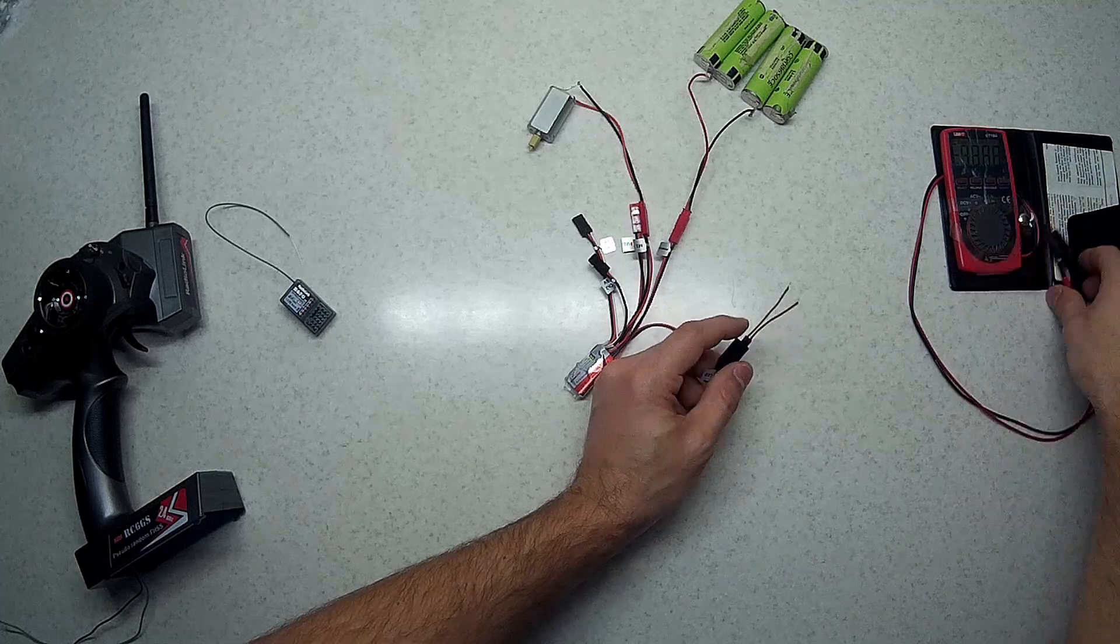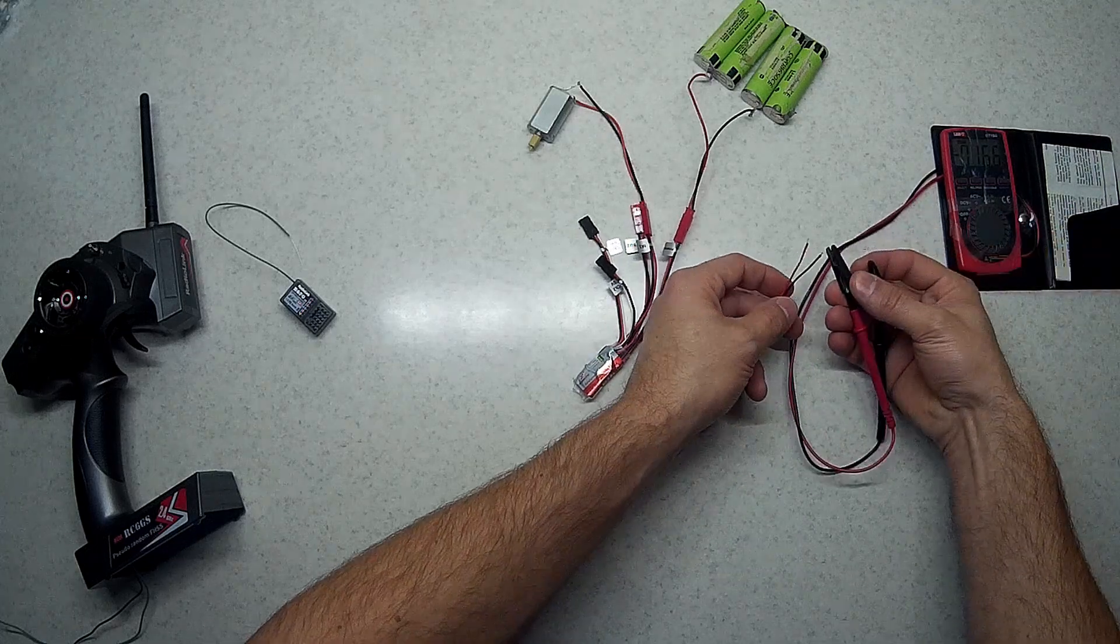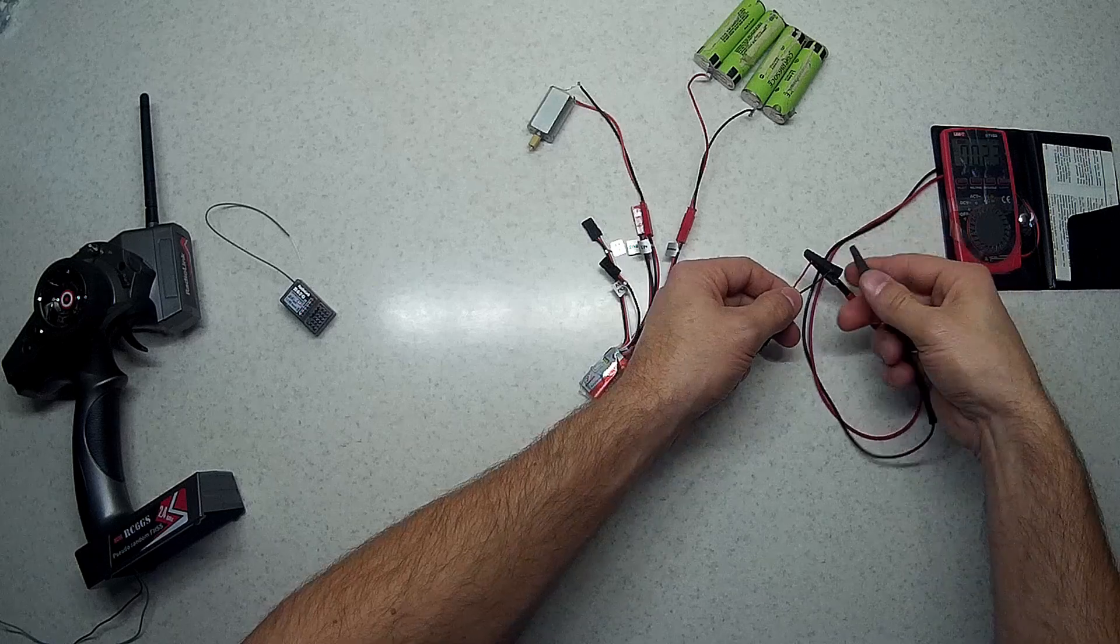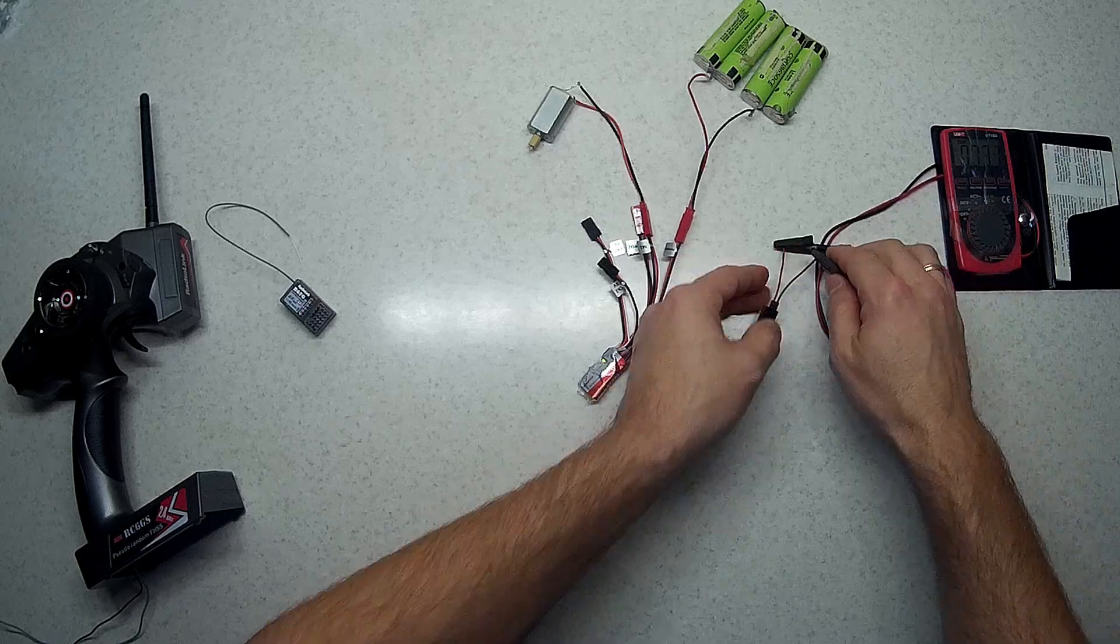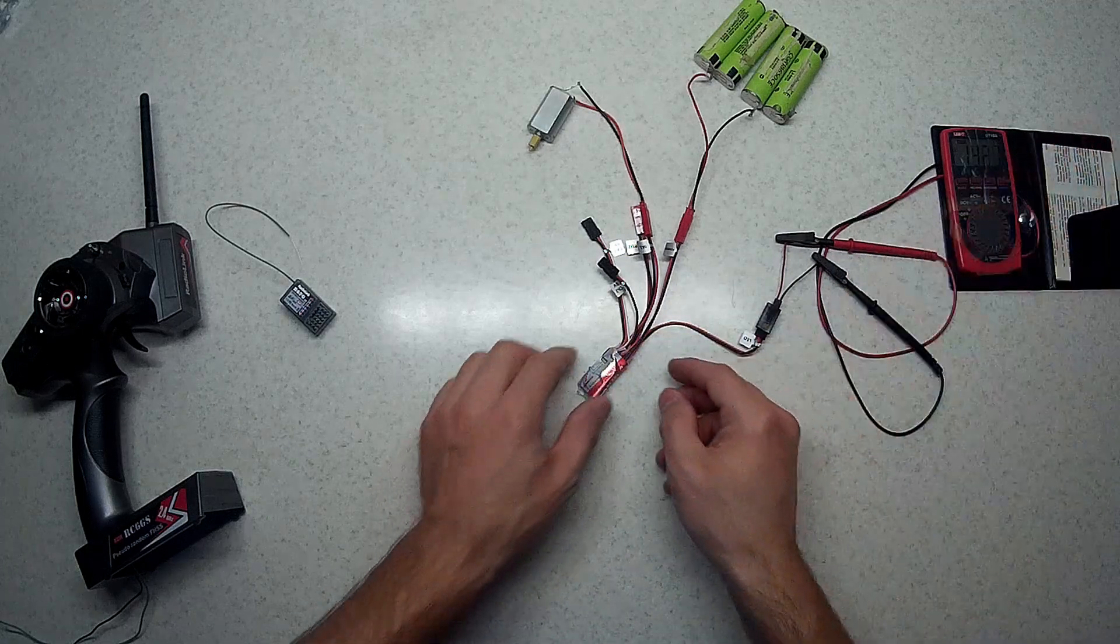So I will connect this wire here, and we'll turn on the multimeter to see what's going on on this connection. Right now we have zero volts.